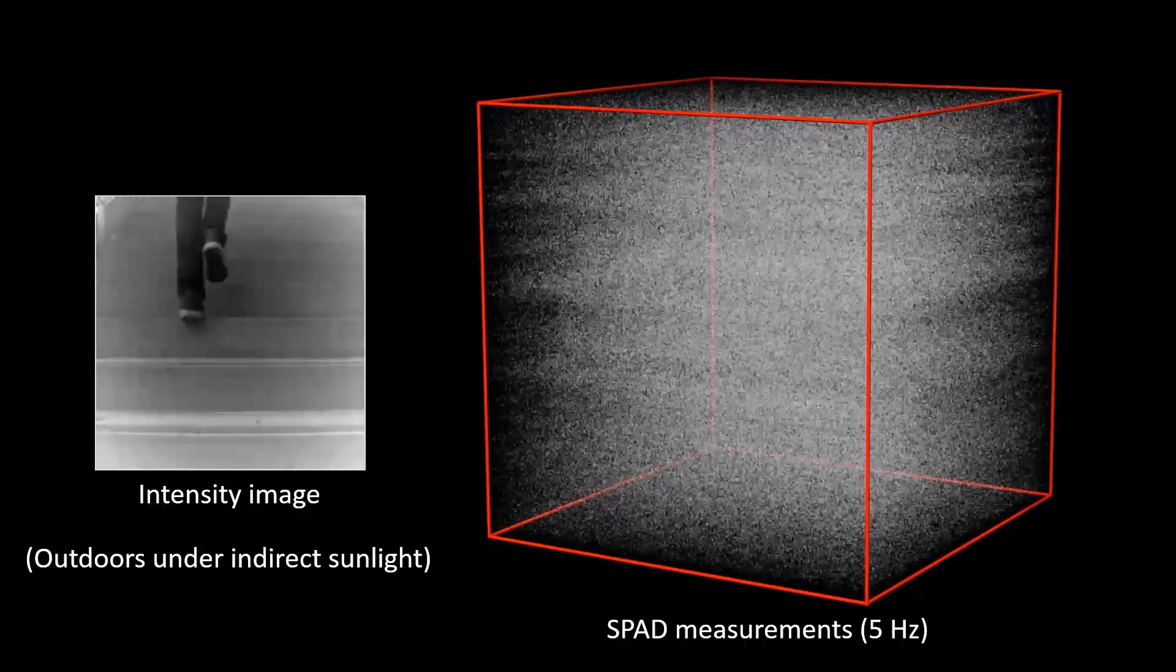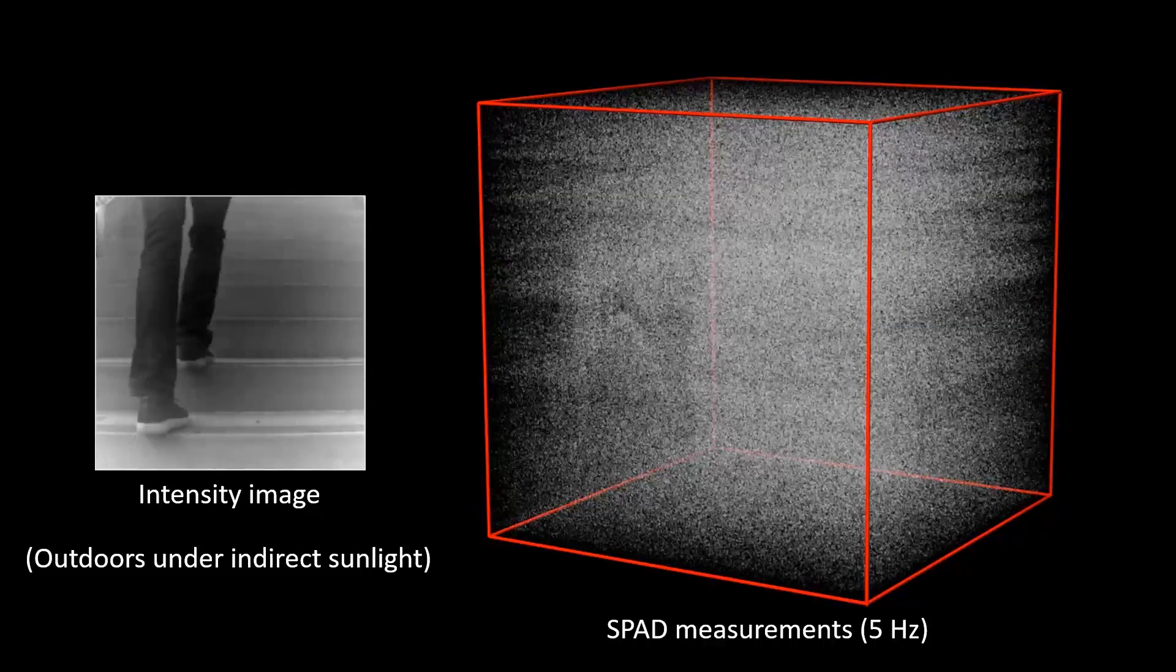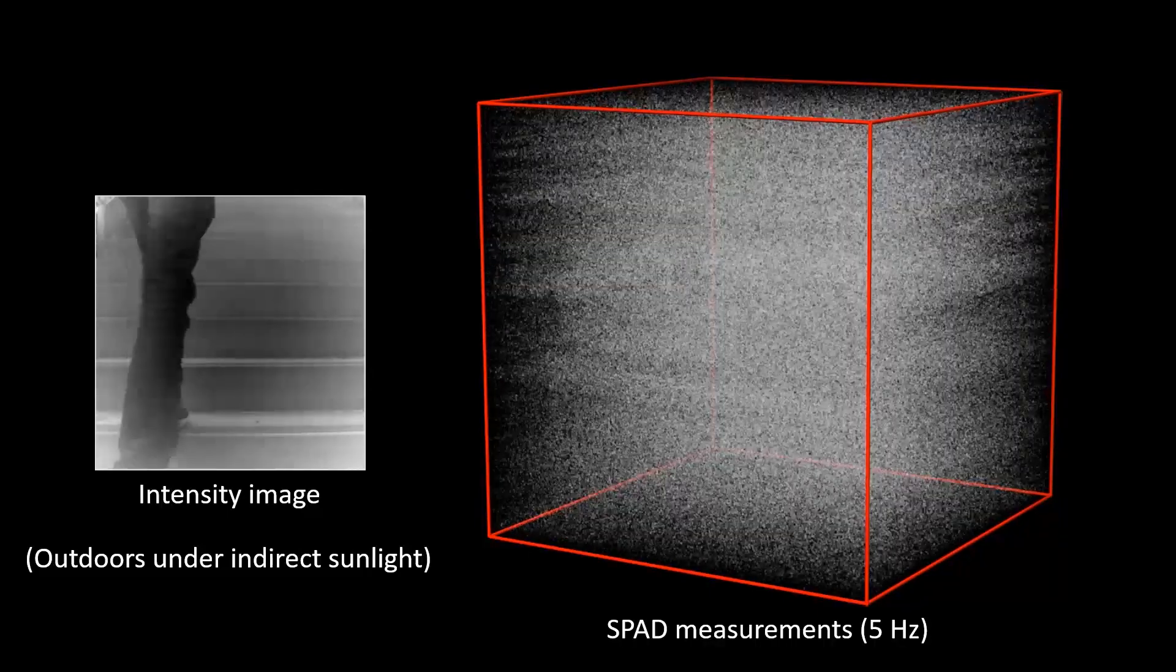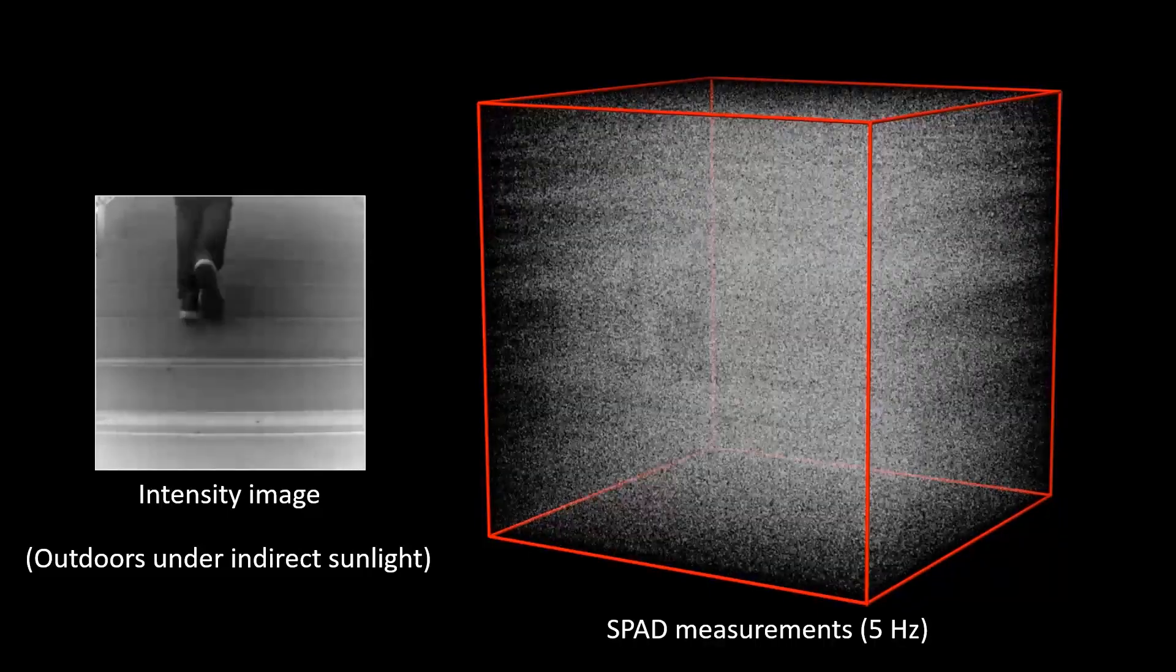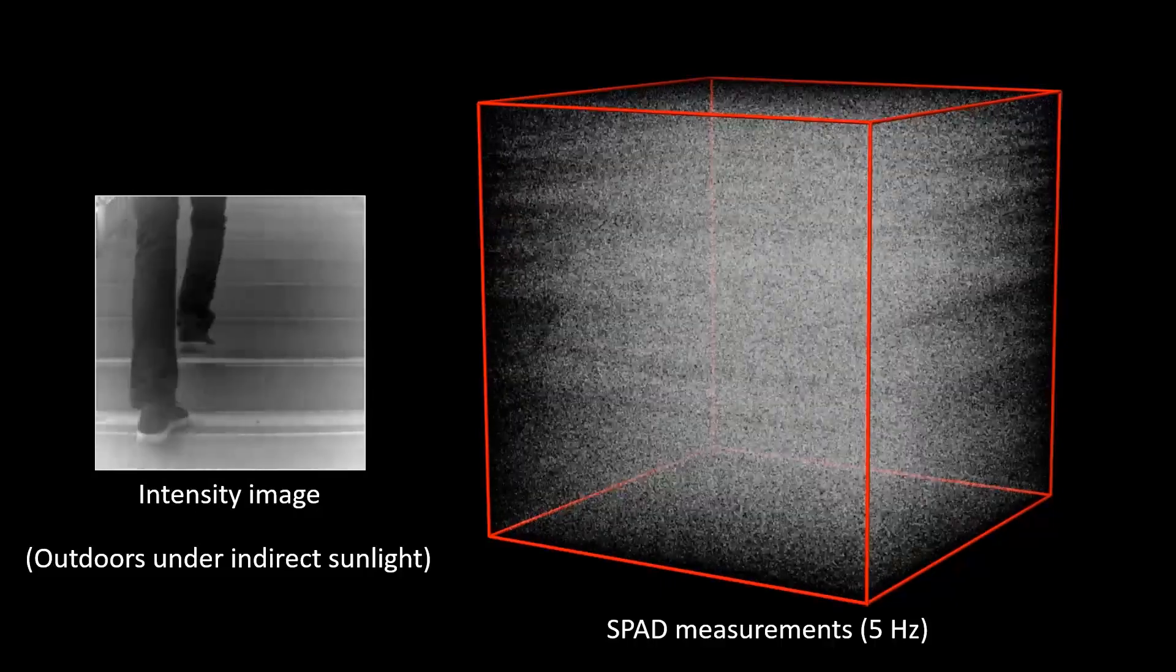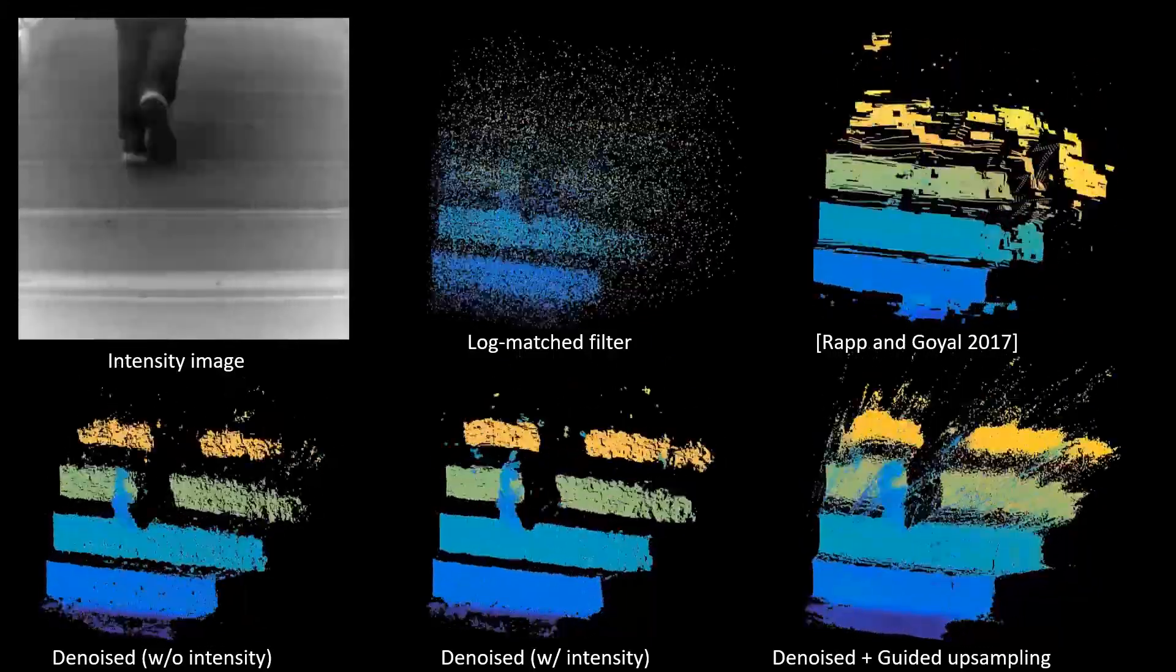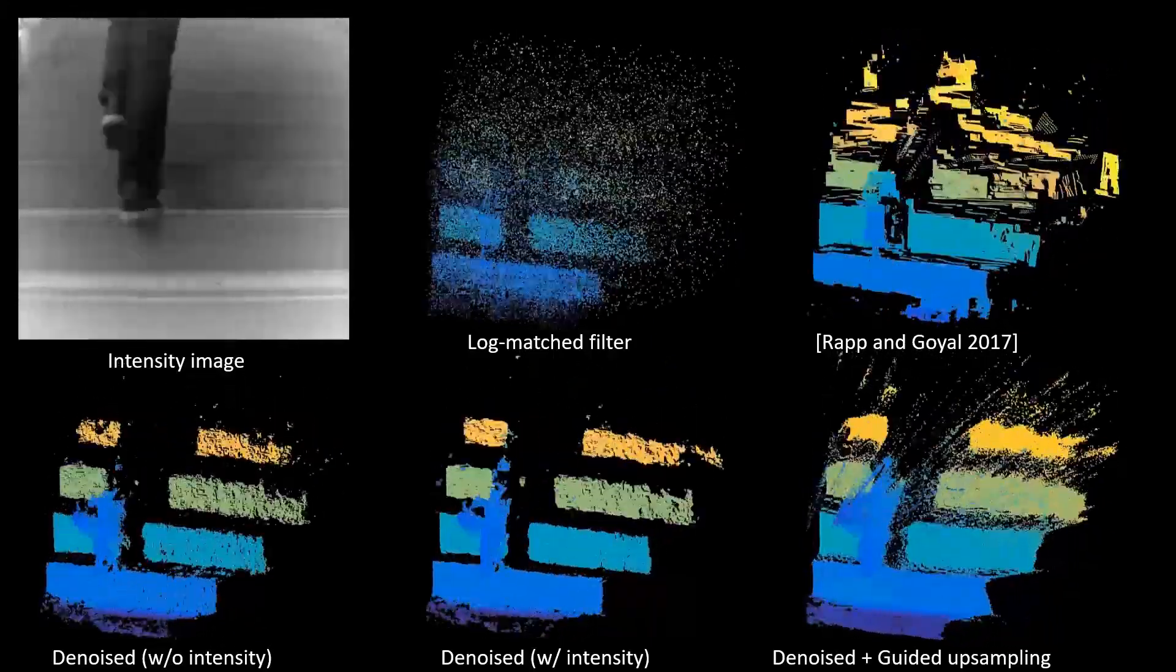We also tested the imaging capabilities outdoors in the presence of indirect sunlight, where the number of detected ambient photons was significantly increased. Due to sensor saturation, the number of signal and ambient detections cannot be accurately reported. Our reconstruction algorithm is capable of recovering the geometry even under this harsh setting.